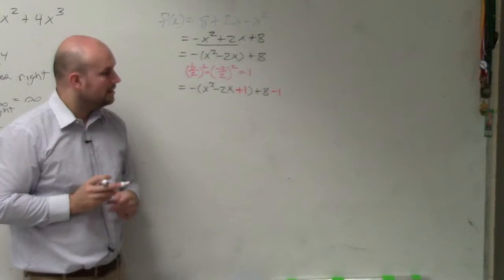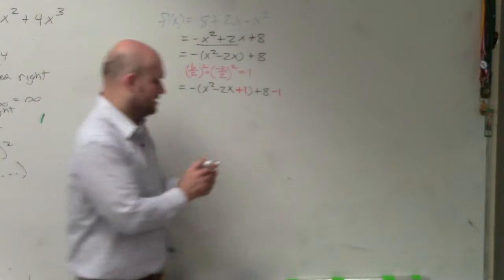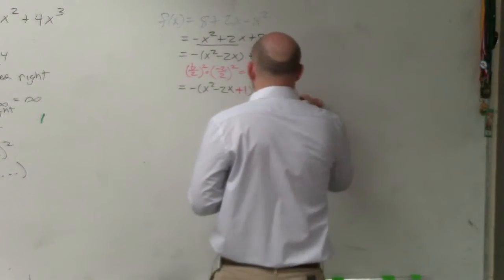Also remember this 1 is being multiplied by a negative by the distributive property. So therefore, I need to multiply it by a negative 1 as well.